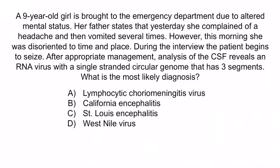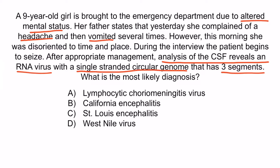Hopefully from the question stem, you notice that this girl has developed encephalitis. We can deduce this based on her altered mental status, headache, vomiting, and a virus found in the CSF. The question stem also states that the pathogen is an RNA virus with a single-stranded circular genome that has three segments, which helps us know that this is a bunya virus. Of the answer choices, only B is a bunya virus. So the correct answer is B, California encephalitis.